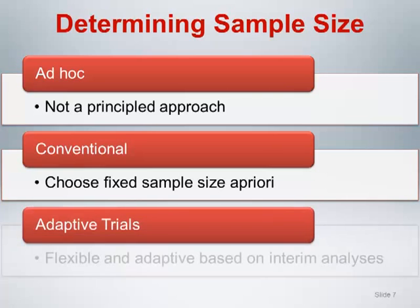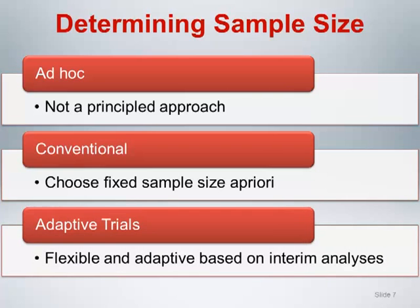A third approach involves using a dynamic sample size that is flexible and adaptive based on interim analyses of the data conducted during sample accrual. Although this approach is gaining more acceptance for use in clinical trials, the sample size methods and analytic methods for these designs are not straightforward. The rest of this section will focus on issues related to the conventional approach.